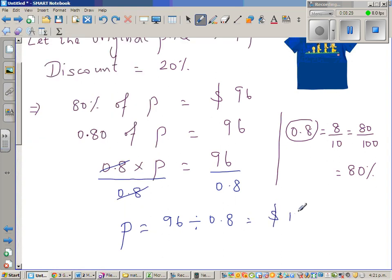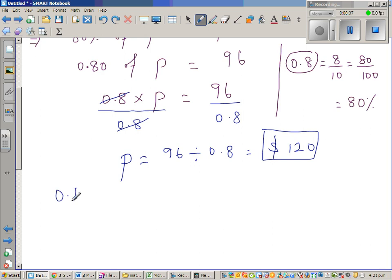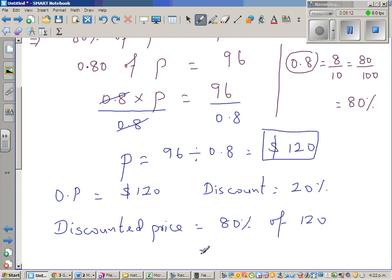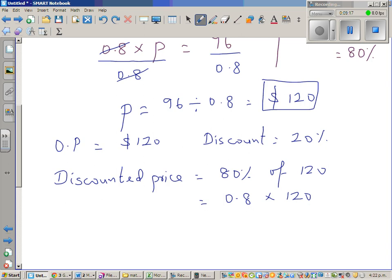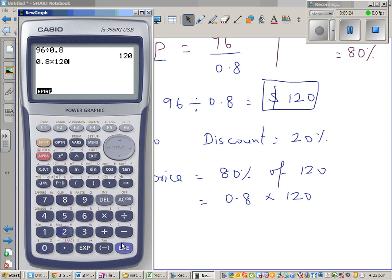So the original price is $120. Again, we need to check whether the answer is right. So original price is $120. There's a discount of 20%. So the discounted price is, whenever you have a discount of 20%, you're saying well I'm paying 80% of the original price. Discounted price is nothing but 80% of $120, which is 0.8 times $120. So let me use a calculator. So 0.8 times $120 is 96. So we have confirmed that our answer is right.